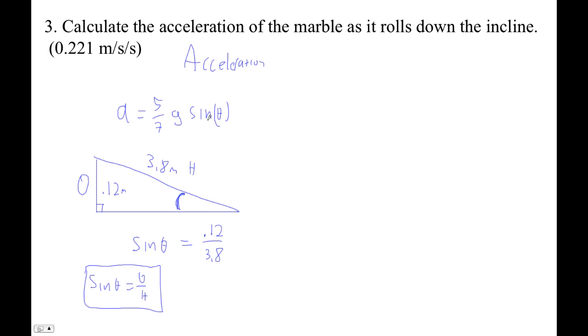So I'm just going to do a direct substitution for that. So now I'm all set. I'm going to go 5 sevenths g is 9.81, and then the sine is 0.12 over 3.8.